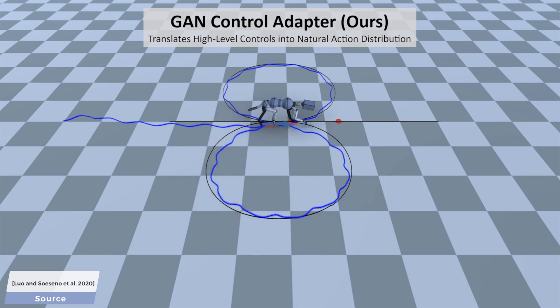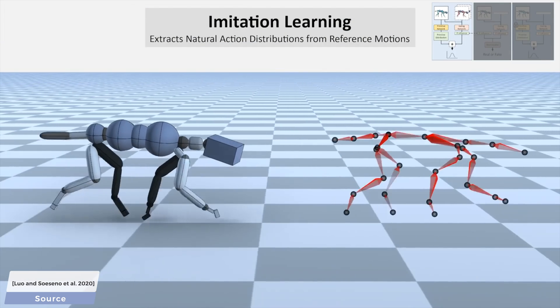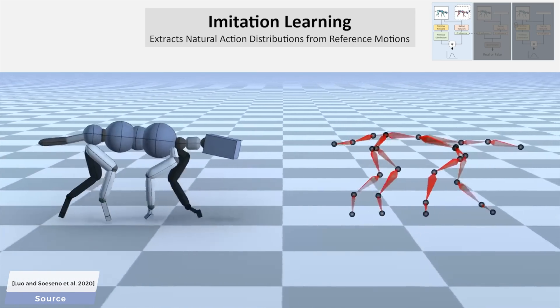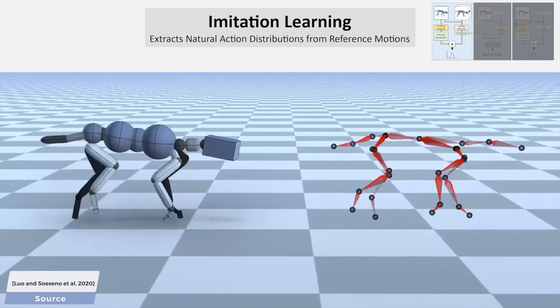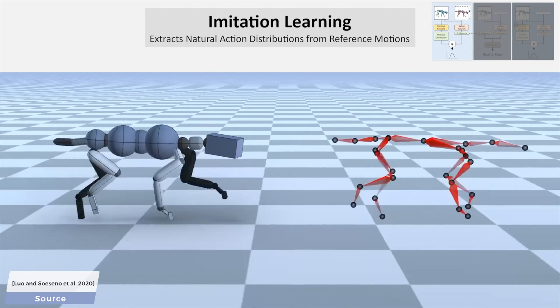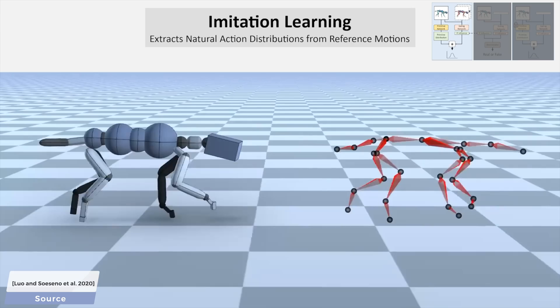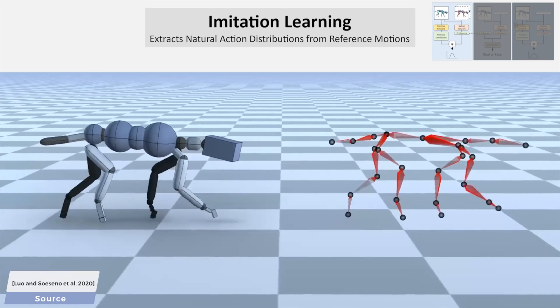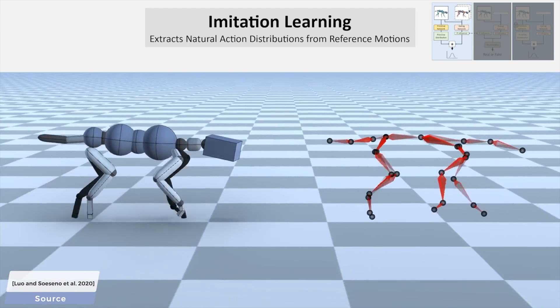The first step we need to perform is called imitation learning. This means looking at real, reference movement data and trying to reproduce it. This is going to be motion that looks great, is very natural, however, we are nowhere near done because we still don't have any control over this agent.